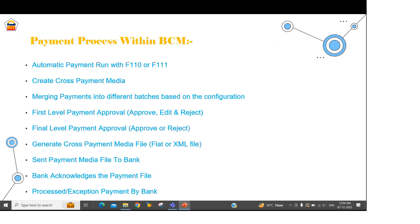Let's discuss the process. First of all, the payments processed through the automatic payment program will flow into the BCM with the help of cross payment media. Once received in BCM, we can merge those payments based on predefined configuration. Once the merging is done, those payments need to go through the payment approval workflow — we can have first level and final level approval.